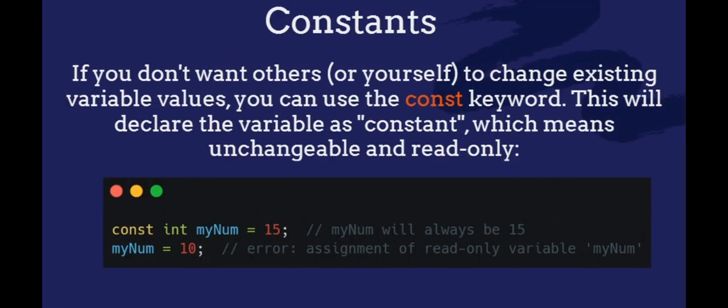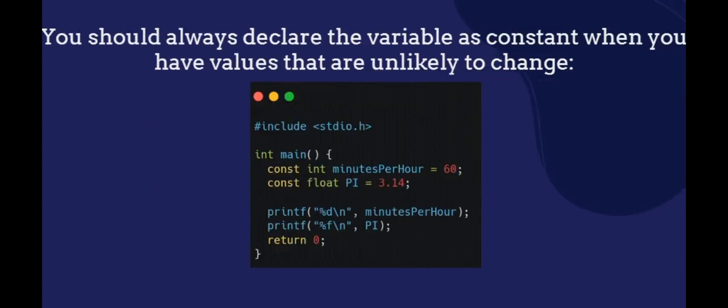Constants in C. If you don't want others, or yourself, to change existing variable values, you can use the const keyword. This will declare the variable as constant, which means unchangeable and read-only. In this example, we have an error because the assignment of read-only variable is not allowed. You should always declare the variable as constant when you have values that are unlikely to change.